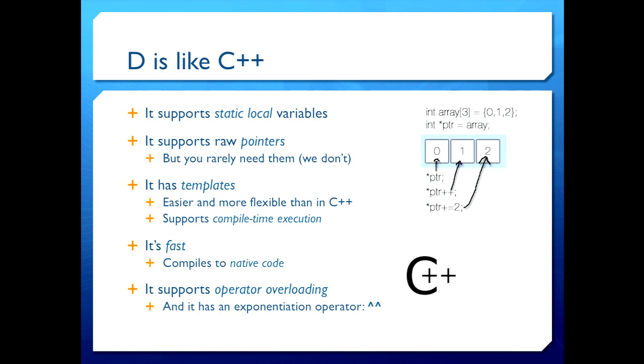So the students that I teach, they have a background in C Sharp and C++ and probably JavaScript and, you know, a few other languages like that. And so I'll just start by telling them, well, D is like C++ in the sense that it supports things like static locals. Of course, the raw pointers are there if you need them. We do not need them for anything we do in this course, but they're there. It has templates. And, of course, the template facility, in my opinion, and perhaps you would share this opinion as well, is more flexible and powerful than it is in C++. I was there on the Standards Committee when templates were introduced.